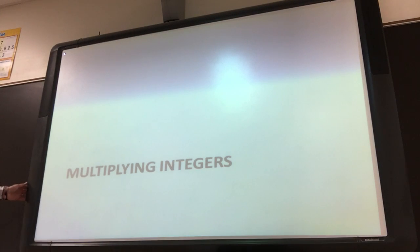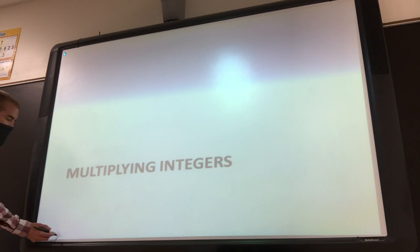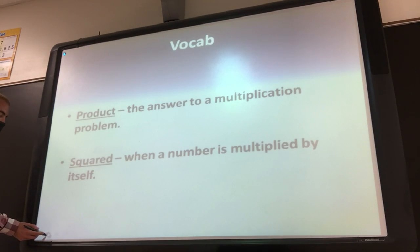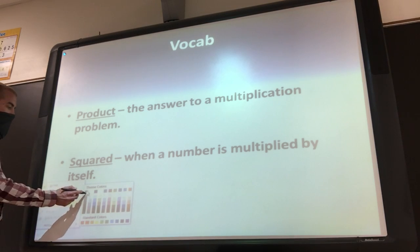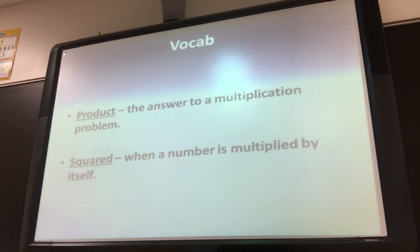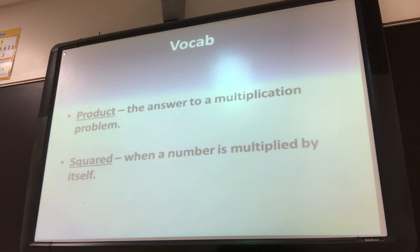All right, so multiplying integers. First of all, a couple of terms to get down. Product is the answer to a multiplication problem, and then squared — we're going to talk about what it means if a number is squared, as well as what we have to do.